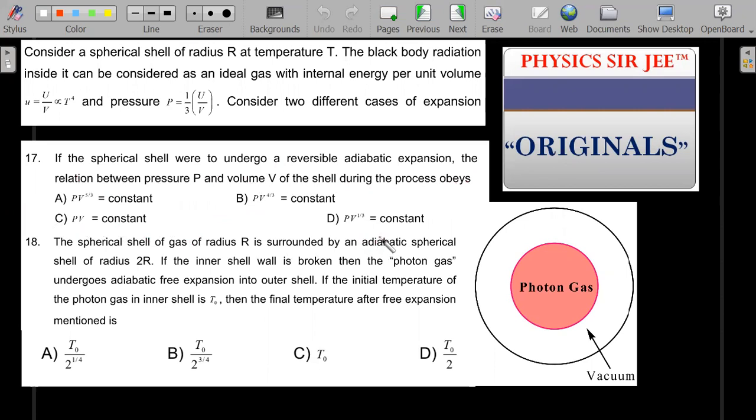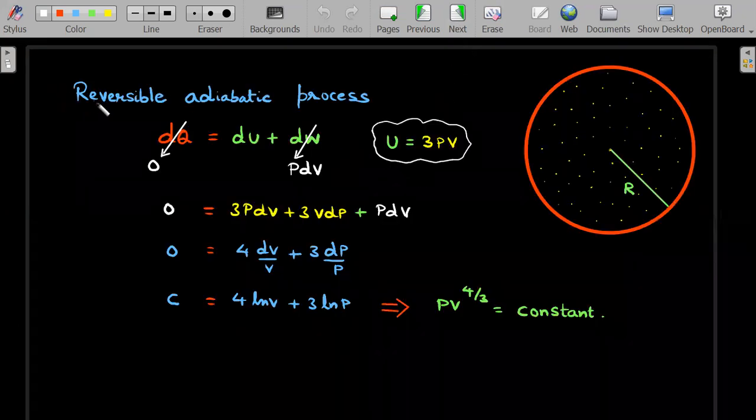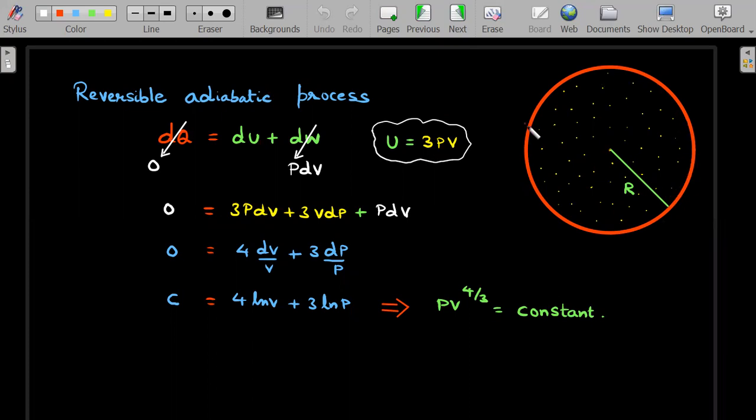We'll start off with the first question. In the first question, if you carefully observe, he is talking about a reversible adiabatic process. Just imagine if this is a spherical shell and slowly but steadily this is flexibly expanding every dt seconds by a small length of dr. That's what a reversible process means. It should contain all the infinitesimal possible steps.